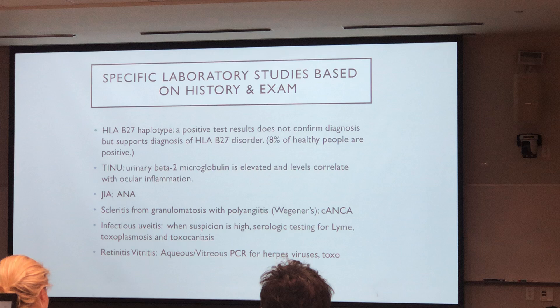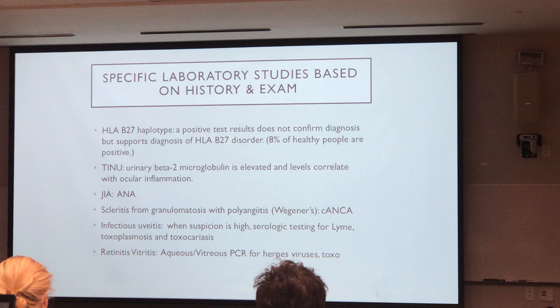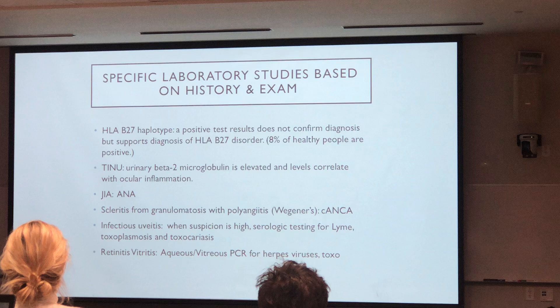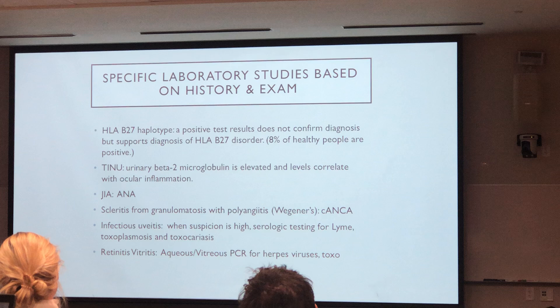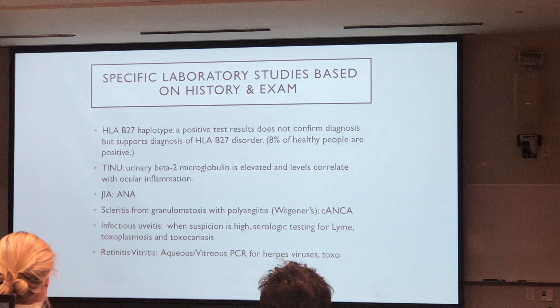When you order HLA-B27, you have to understand you're ordering a test where 8% of healthy people walking down the street are going to be HLA-B27 positive. Other specific laboratory tests I'll order include urinary beta-2 microglobulin — if elevated, it's highly suspicious of TIN. For JIA patients, I'll order ANA; with scleritis, I'll order ANCA. If there's suspicion of infection, I'll get serologic tests for Lyme, Toxoplasma, or Toxocara. If I have a patient with retinitis, we'll get aqueous and vitreous PCR for herpes viruses and Toxoplasma.